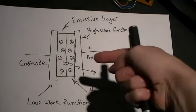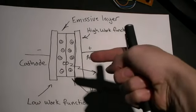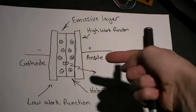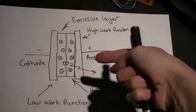For the anode, we'll use a high work function, which is more likely to accept electrons than give electrons. It will be the transparent conductor indium tin oxide on glass.